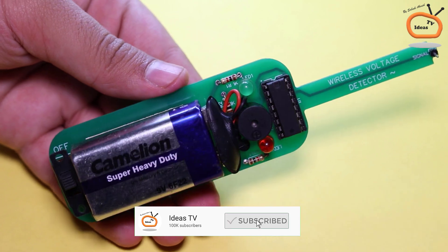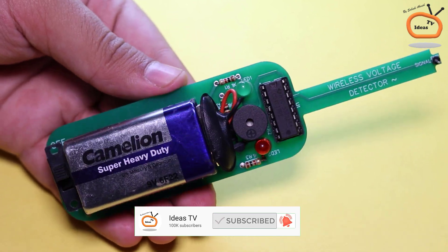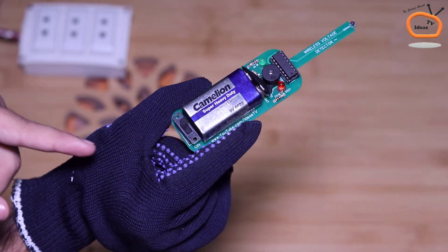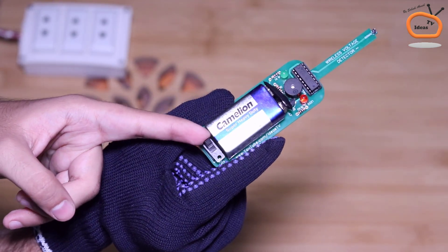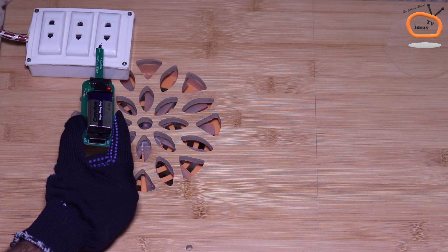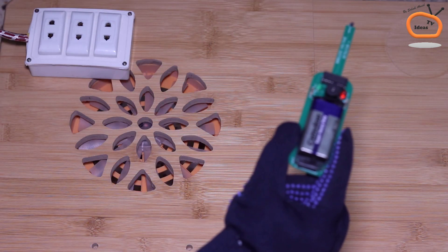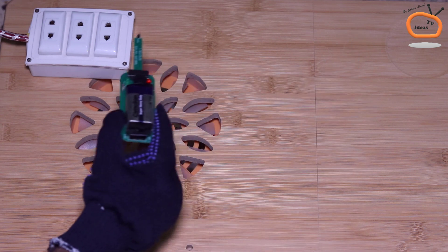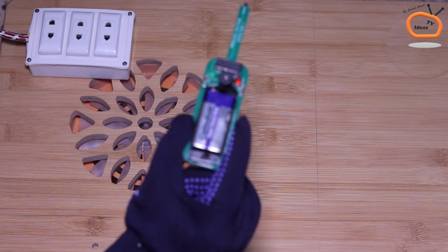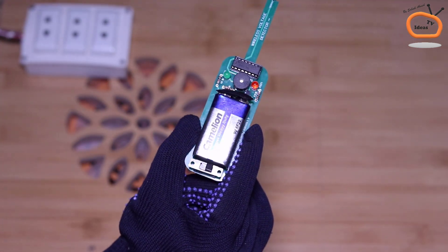So our touchless tester is ready. Now just switch on the tester and start testing. Please do not touch this tester directly to the AC power source. This tool can detect the voltage within a range of maximum 5 cm without any physical touch with the AC power source.